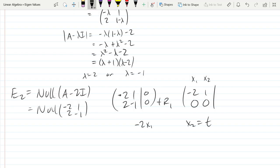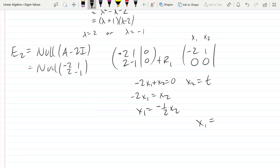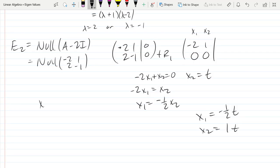Negative 2x1 plus x2 equals 0. So negative 2x1 equals negative x2, x1 equals positive 1 half x2. It definitely should be positive 1 half. So our x vector is 1 half, 1 times t. Now, I don't like fractions. So I'm going to go 1, 2, t. Like that.